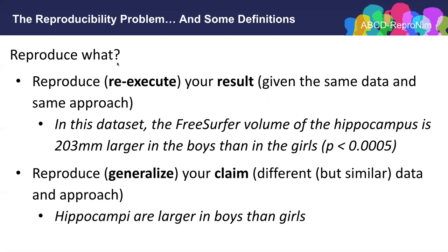As importantly, or even more importantly, we'd like to be able to reproduce in the context of generalizing the claim that was made in that publication. In this case, the claim is that hippocampi are larger in boys than in girls. The ReproNim position is that in order to explore generalization efficiently, we really have to have both of these types of procedures in place — we need publication-level re-executability so that we can verify and then explore implicitly the generalization of the claim by using that re-executable framework and expanding it across different datasets and different analytic approaches.